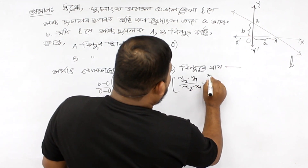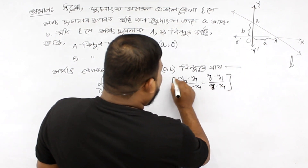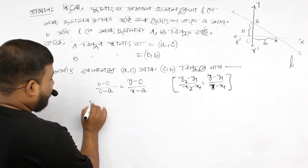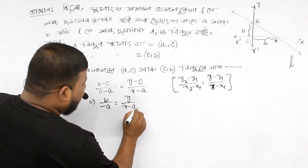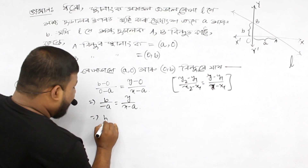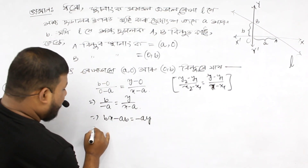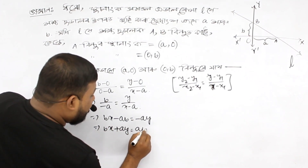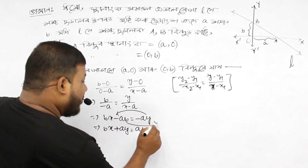So, A and B are elements — remember in the description — bx minus ab equal to minus ay. So, the x term is equal to x and the equation simplifies accordingly.